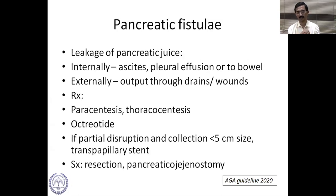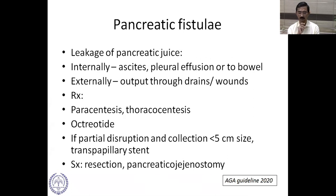Pancreatic fistula refers to leakage of pancreatic juice, either internal — leading to ascites, pleural effusion, or communication with a viscus — or external, draining through wounds or drains. Treatment includes drainage via paracentesis or thoracocentesis, octreotide to reduce output. If the pancreatic duct disruption is partial and collection is less than 5 cm, a transpapillary stent can be used. Surgical options include resection or pancreaticojejunostomy.